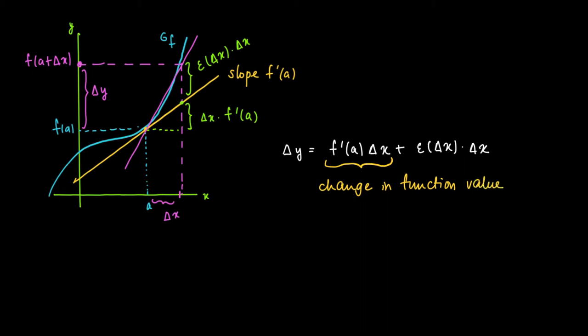And the remainder between the absolute change in function value, so the exact change in function value, and this linear approximation is given by epsilon(delta x) times delta x. So we have two components in the exact change: one is due to the tangent line, moving along the tangent line, and the other one is the error we make by using this as an estimate. So the error, or the difference between the exact change and the estimated change.